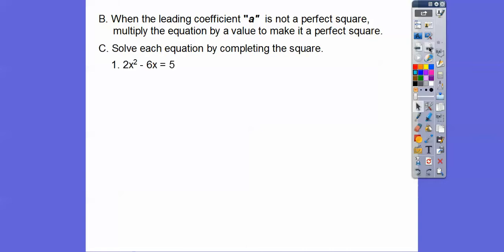So here, 2x squared minus 6x equals 5. So think of 2 goes into what perfect square? Well, if we make this a 4x squared, then it becomes a perfect square. So we'll multiply both sides of this equation by 2. So when we multiply by 2, we get this.